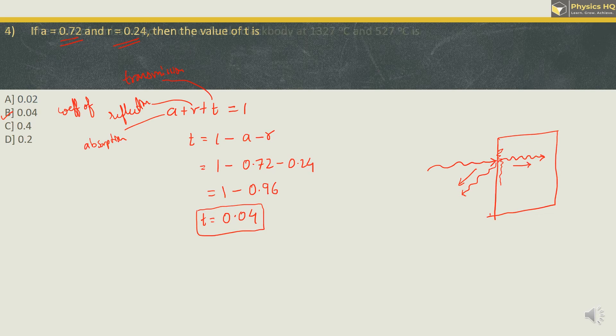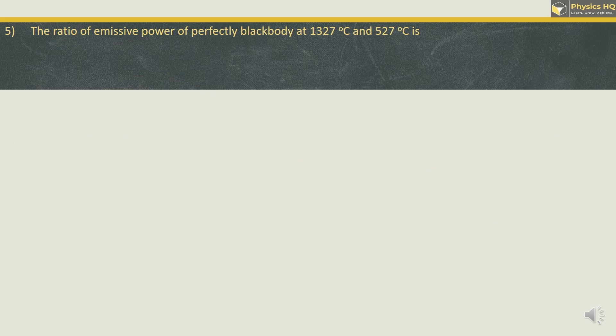The ratio of emissive power of a perfectly black body at 1327 and 527 degree Celsius is 4 is to 1, 16 is to 1, 2 is to 1 or 8 is to 1. First of all, we will find the emissive power formula. The formula for emissive power is given as P is equal to sigma A T raised to 4.